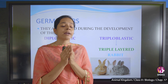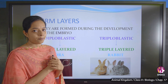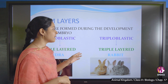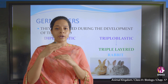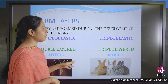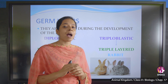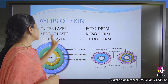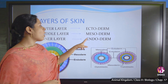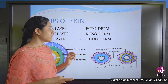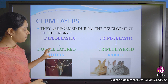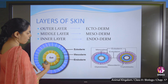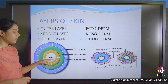There are two types of germ layers: diploblastic and triploblastic. Diploblastic means double-layered organisms with only two layers — example is hydra. Triploblastic means triple-layered, three-layered organisms — example is rabbit. The outer layer is called ectoderm, the middle layer is called mesoderm, and the inner layer is called endoderm.